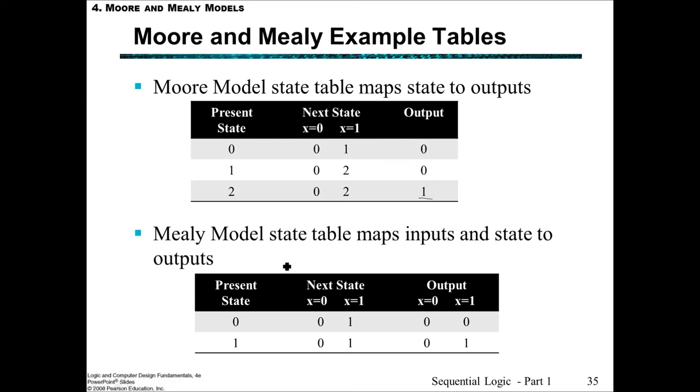In the Mealy model state table we only have states 0 and 1, only need 2 states, whereas the Moore model we needed 3 states. The other thing you'll notice is that we can't just say what the output is based upon what state we're in, it also depends upon what input. So whether we have an input of 0, and we're in state 0 or 1, or whether we have an input of 1, and we're in states 0 or 1. The only case where we get an output of 1 is where we're in state 1, and we have an input of 1, and then we get an output of 1.